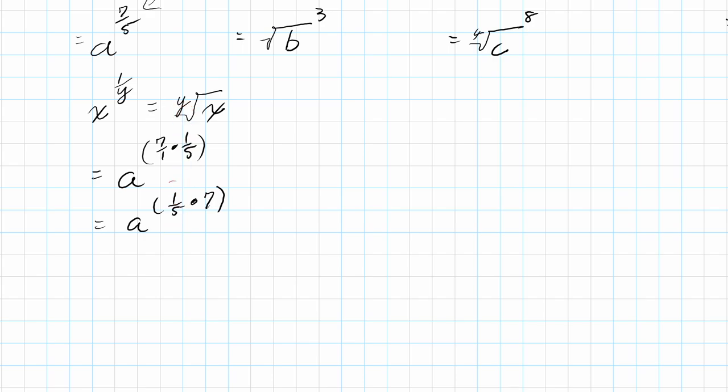So if I want to apply this fraction to this value here, I would say a. And then it would be technically to the fifth root of whatever a is. And I still have that 7. So that's 7. We can write it like this, outside the root. Or another way of writing it is you could say a to the 7th all underneath the fifth root.